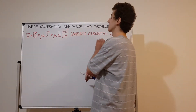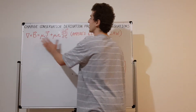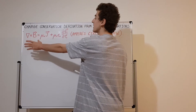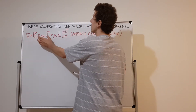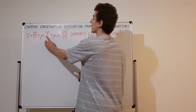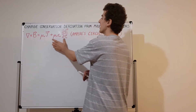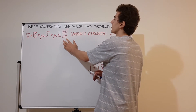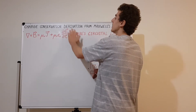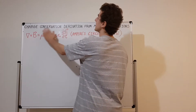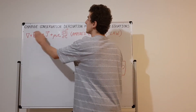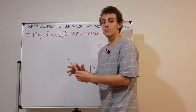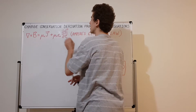Let's have a look at Ampere's circuital law. The curl of the magnetic field is on the left-hand side. On the right-hand side we have two terms: one related to the current density, and one related to the partial derivative with respect to time of the electric field. This tells us that if there's a change in the electric field or some current flowing, that's going to induce a circulation of the magnetic field.